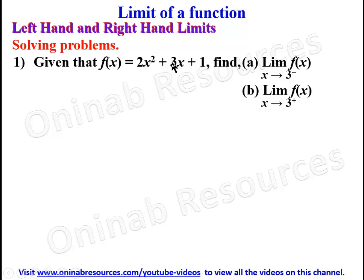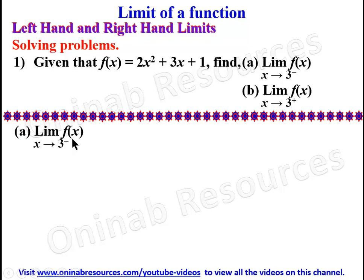The first problem: given that f(x) = 2x² + 3x + 8, find (a) the limit of f(x) as x approaches 3 negative, and (b) the limit of f(x) as x approaches 3 positive. To find the limit from the left-hand side, we say limit as h approaches 0, so wherever we see x it becomes 3 minus h, where h is the incremental height from 3 on the left-hand side.